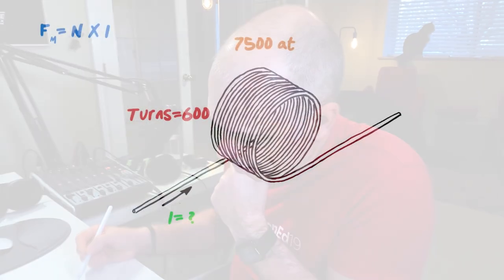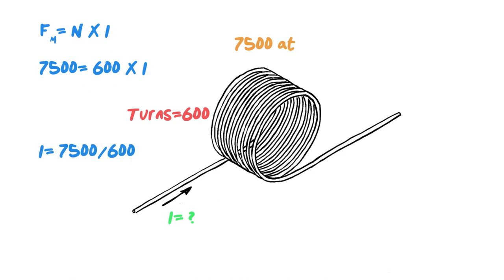Let's do one more example. In this example, we have turns and we have the magnetomotive force, but we're looking for the current. We plug in what we know: FM is 7,500 and the number of turns is 600, but we don't know the current. It looks to me like the current is going to be 7,500 divided by 600, which is exactly what the formula works out to be. In this case, our current works out to be 12.5 amps.